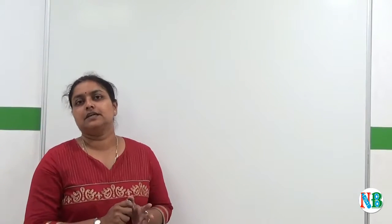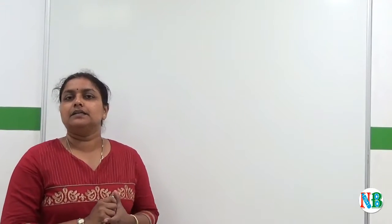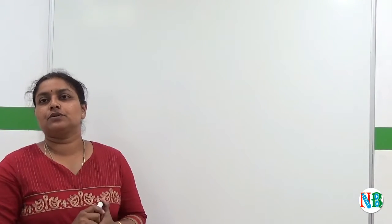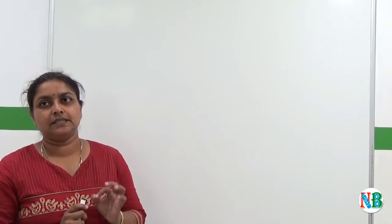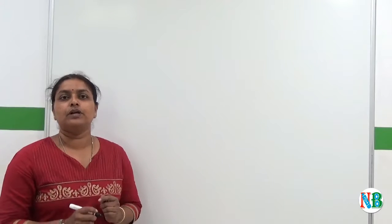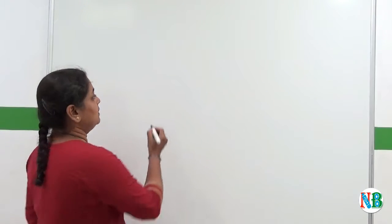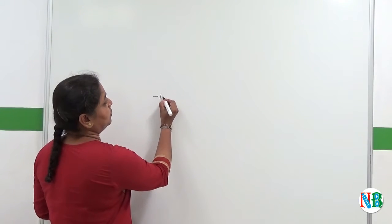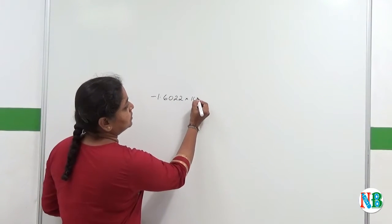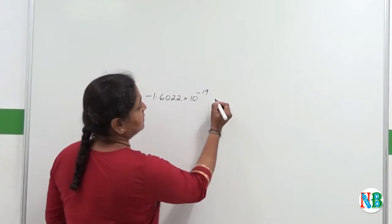In 1908, R.A. Milliken devised an experiment to find out the charge of an electron. The charge of the electron which is represented by the letter E. This charge, he found out through the oil drop method to be minus 1.6022 into 10 to the power of minus 19 coulombs.